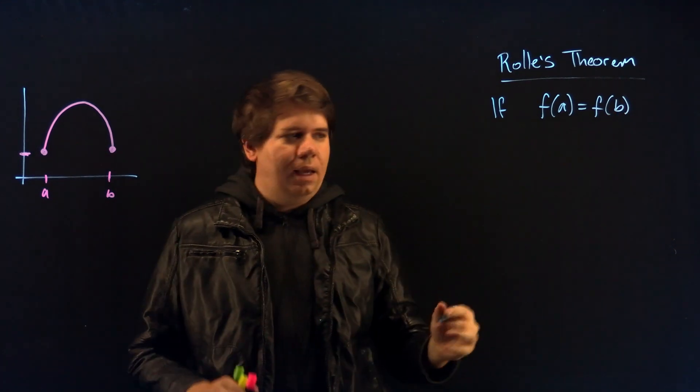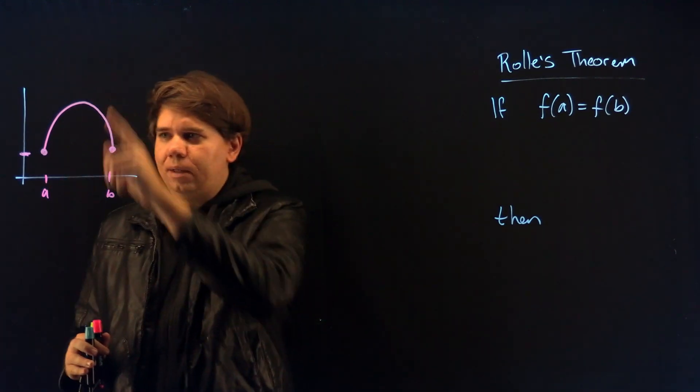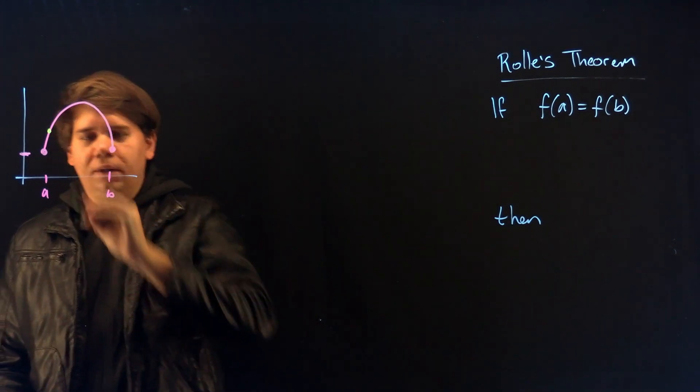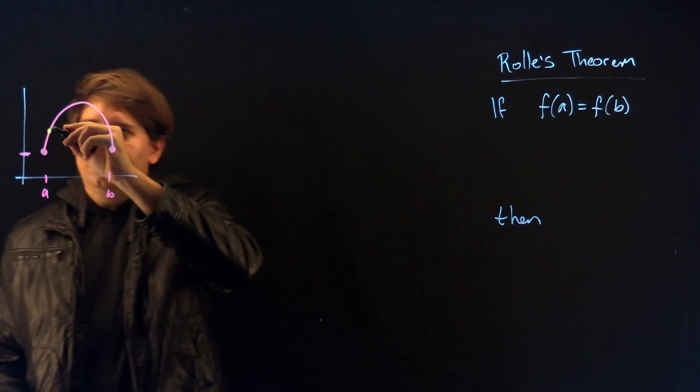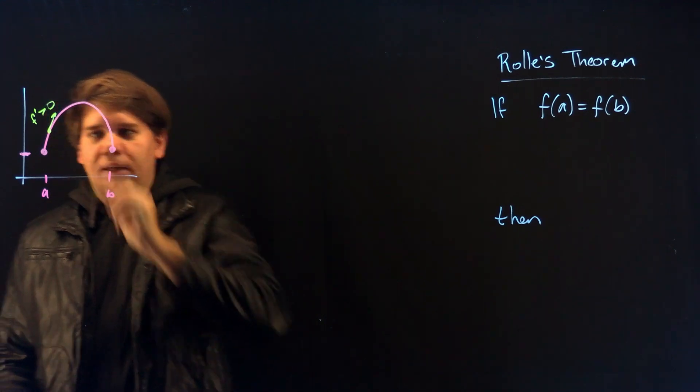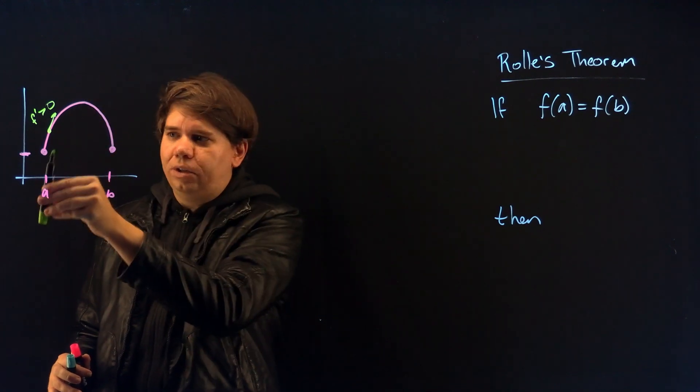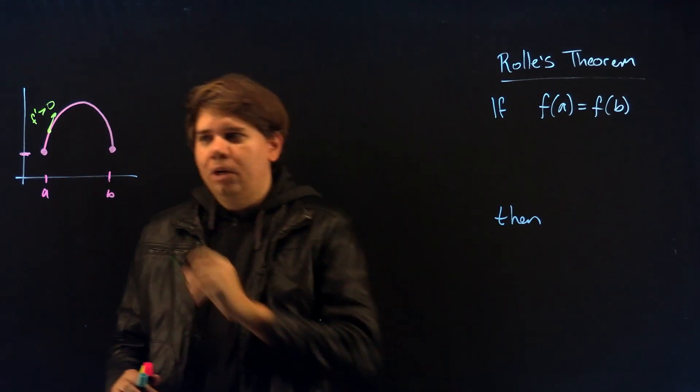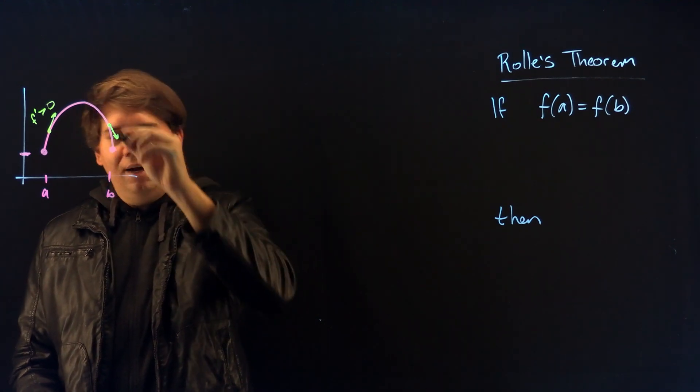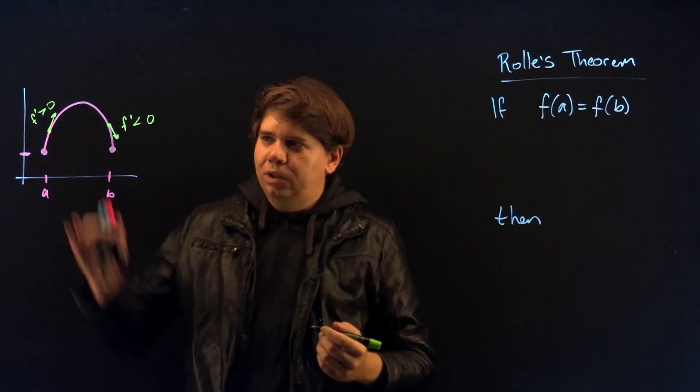Then what can we say about this function? You'll notice when you look at this function there are some places where the function is increasing. For example if I take a point right here the derivative at that point is positive so I look at the tangent line, I notice my derivative is positive and positive derivative corresponds to the function increasing. The function is getting bigger as you're near that point. Whereas if I'm at a point over here and I look at my tangent line it's going down, the slope is negative and my function is getting smaller. My derivative is negative and my function is decreasing.